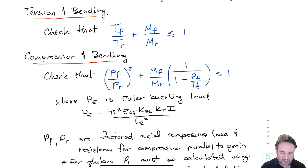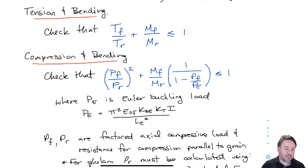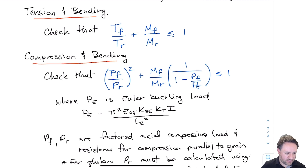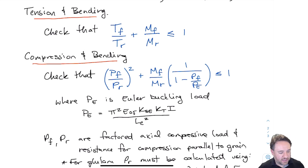So those are the two interaction equations. For tension plus bending, as long as TF/TR plus MF/MR is less than or equal to 1, the design is acceptable. For compression plus bending, as long as the left-hand side expression is less than 1, the design is acceptable — though it may take some trial and error for all conditions to be satisfied simultaneously.